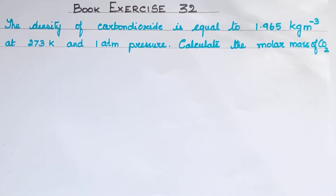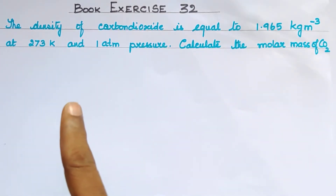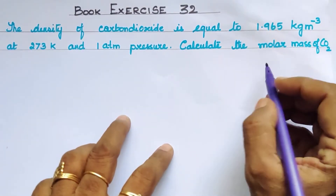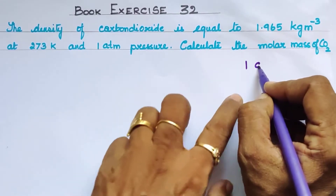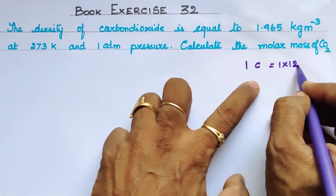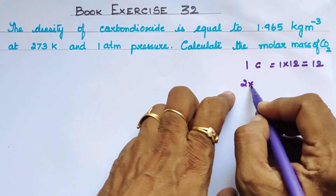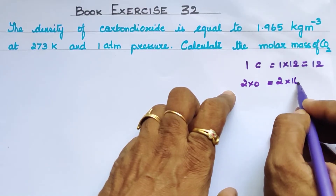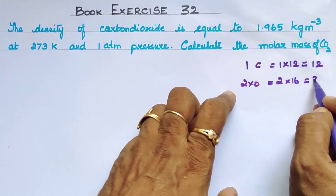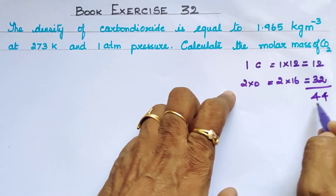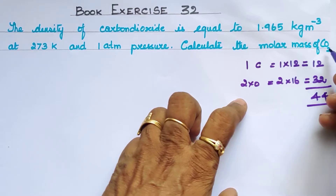Which substance is called carbon dioxide? Carbon dioxide — it's easy to work with this data. The molar mass of carbon: 1 carbon is equal to 1 into 12, which is 12. And 2 oxygen atoms: 2 into 16, which is equal to 32. So the total molar mass is 44. So 44 grams per mole is the molar mass of carbon dioxide.